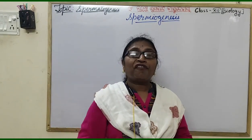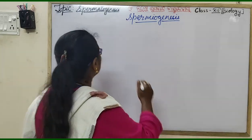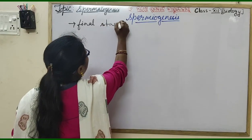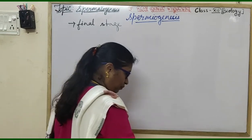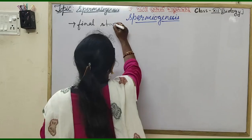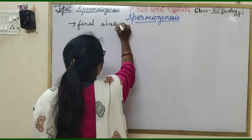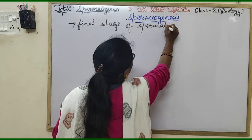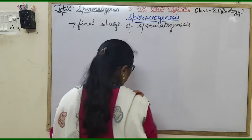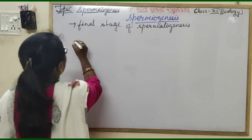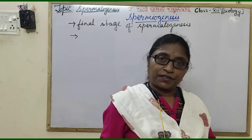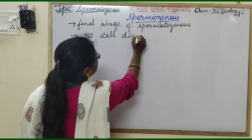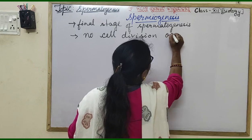Spermiogenesis is the final stage of spermatogenesis. In spermiogenesis, no cell division occurs.